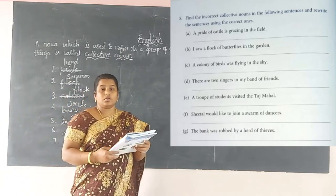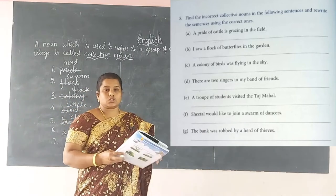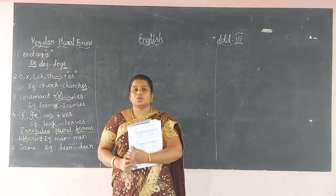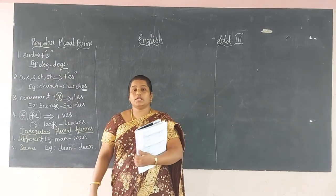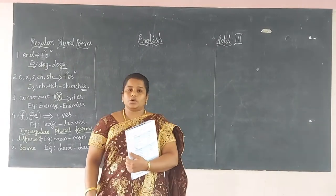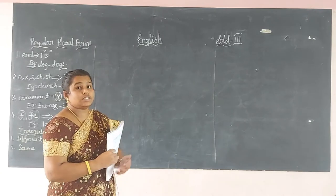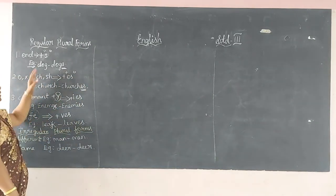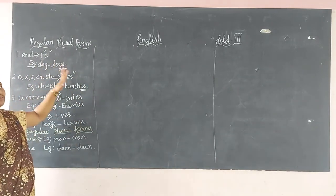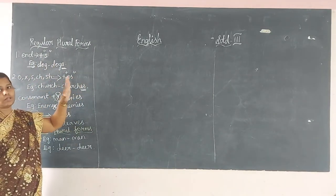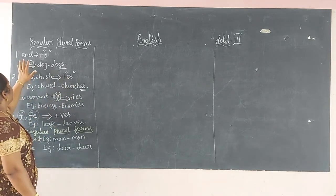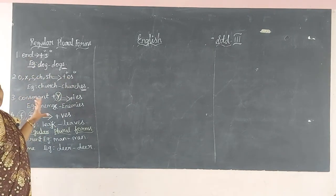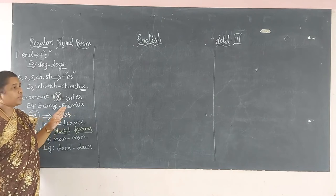Now let me move to the next topic: regular and irregular plural forms. For regular plural forms there are four rules. The first rule: if the word just ends normally, we want to add 'S.' For example: book, note, blackboard, bench, table — for these words, we just add 'S.'